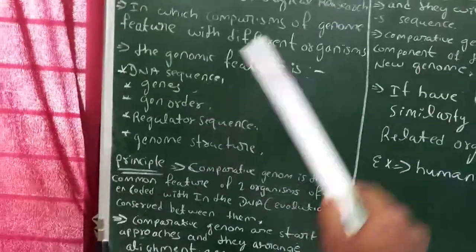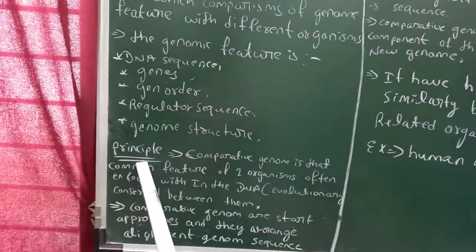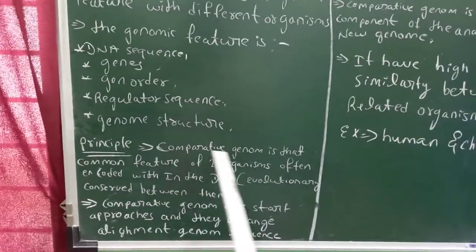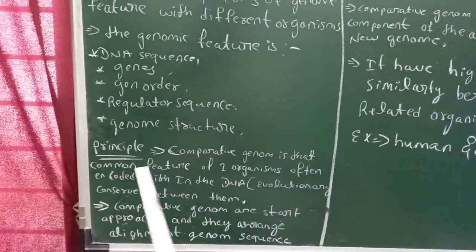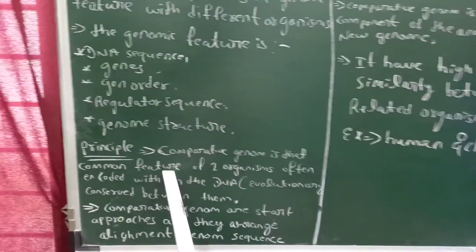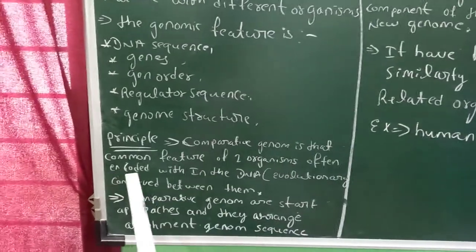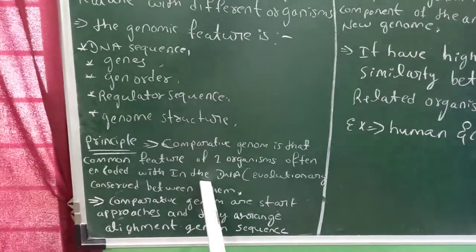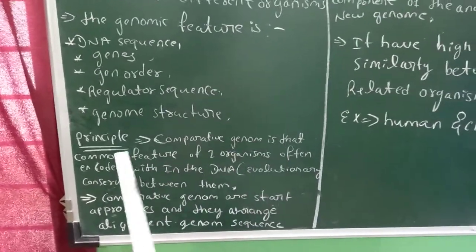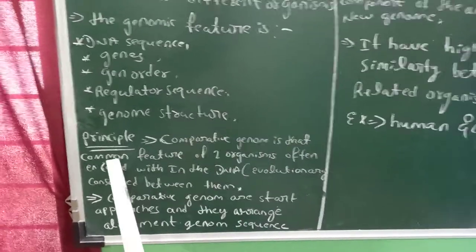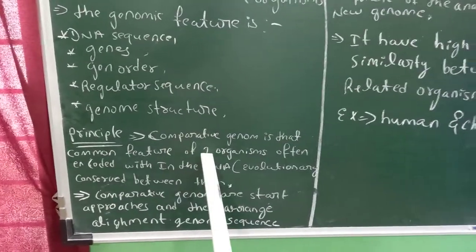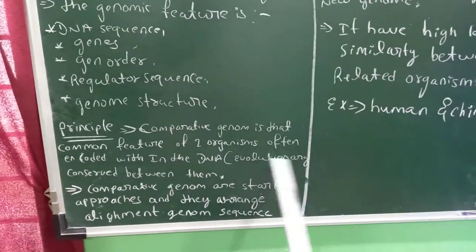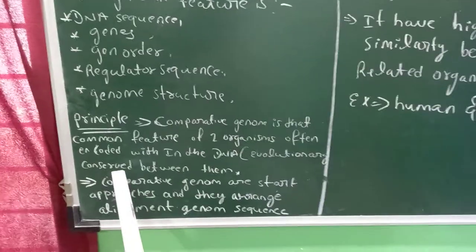The major principle of comparative genomics is that common features of two organisms are often encoded within the DNA, showing evolutionary concern within them.